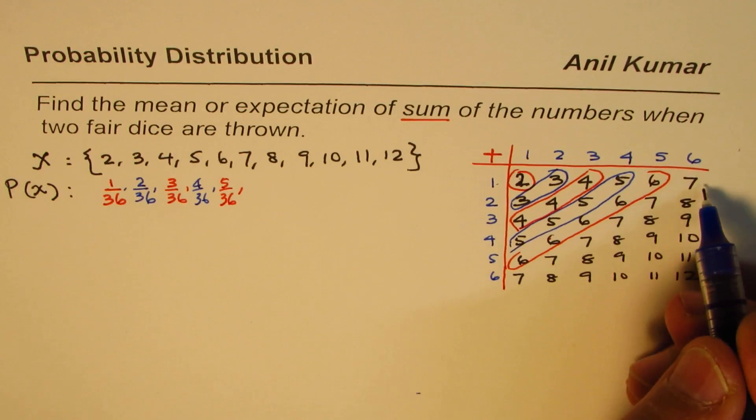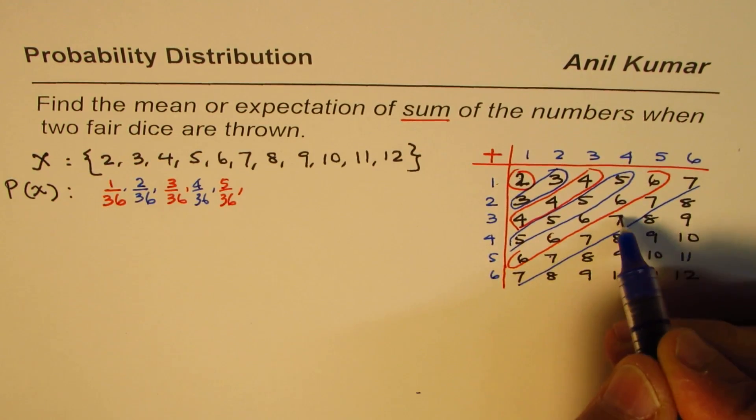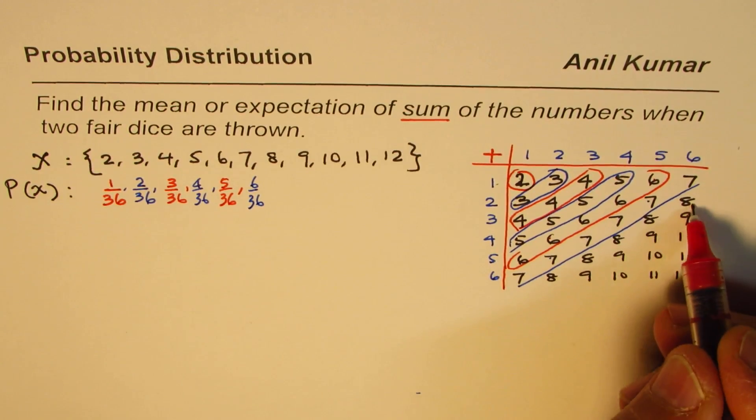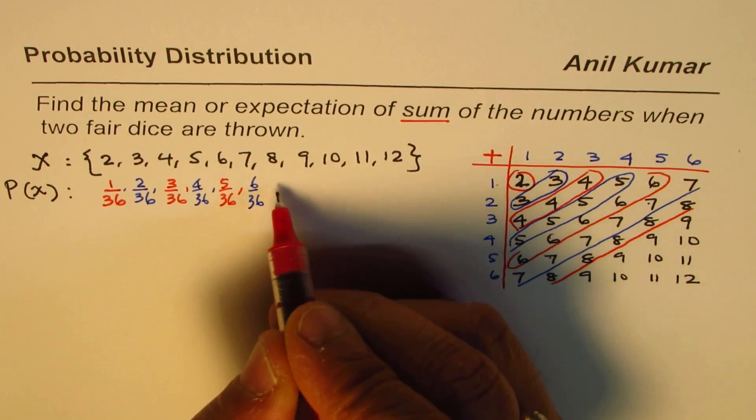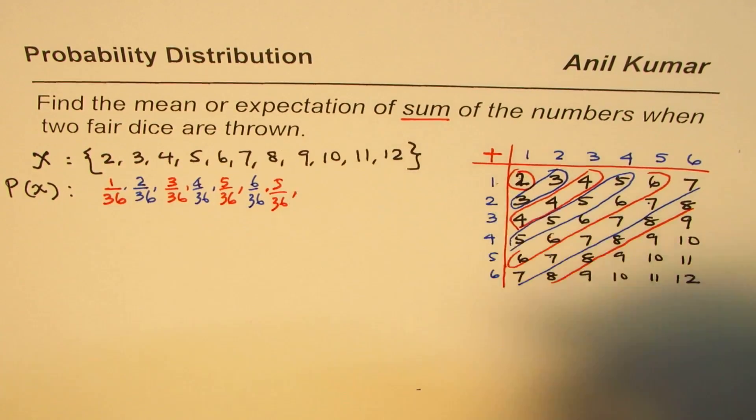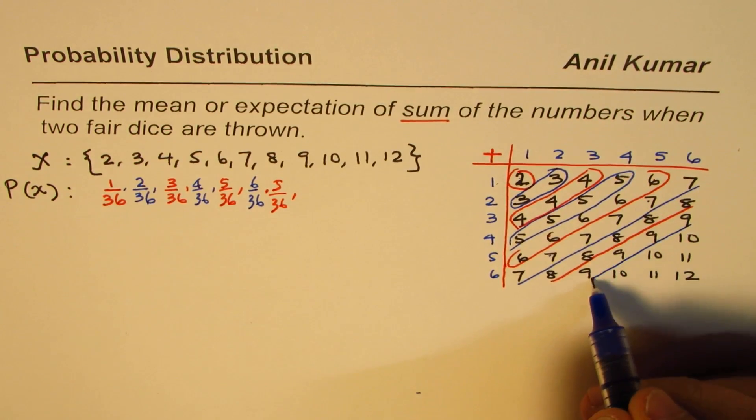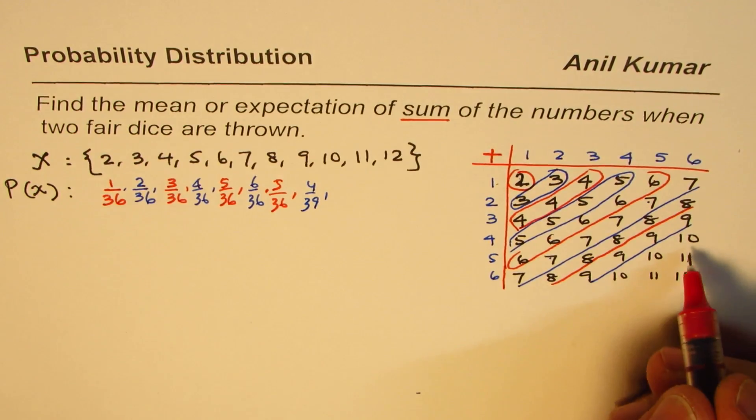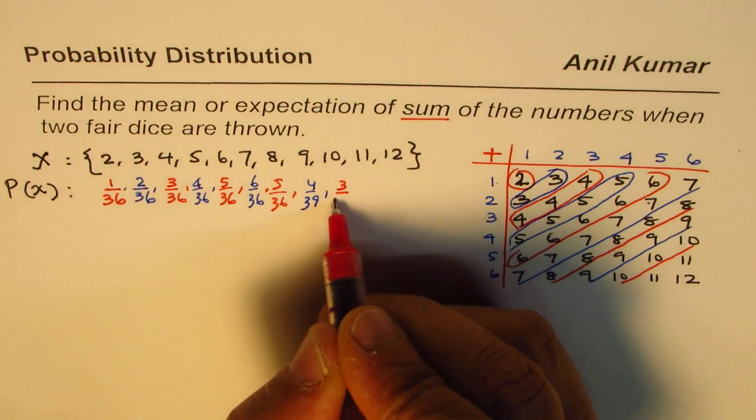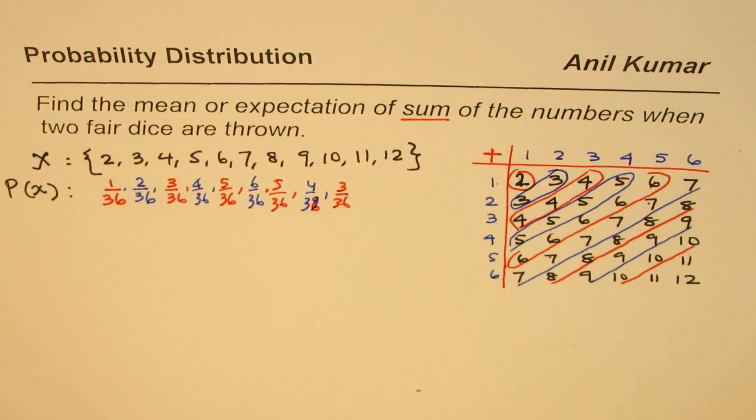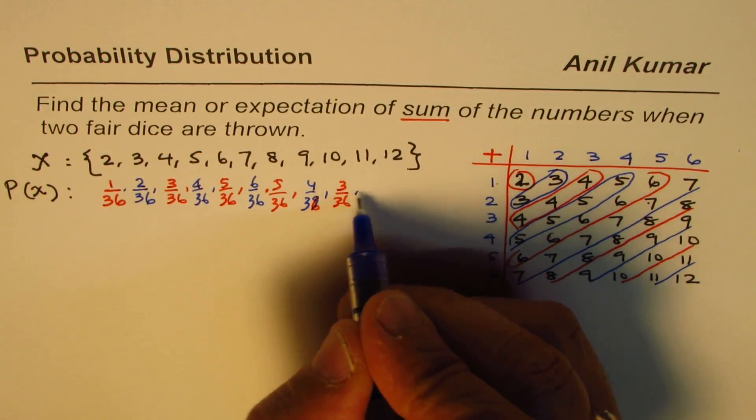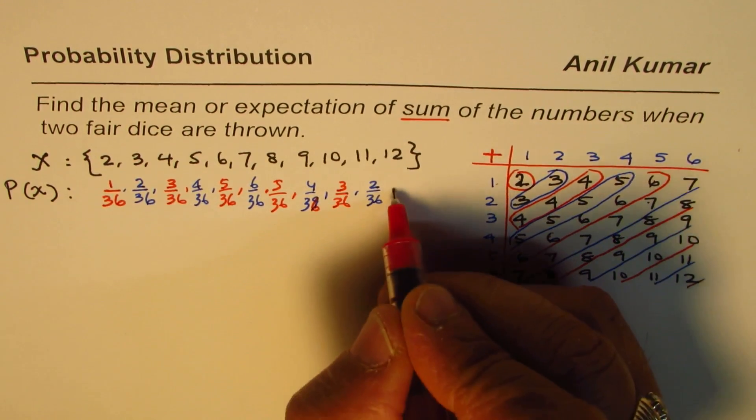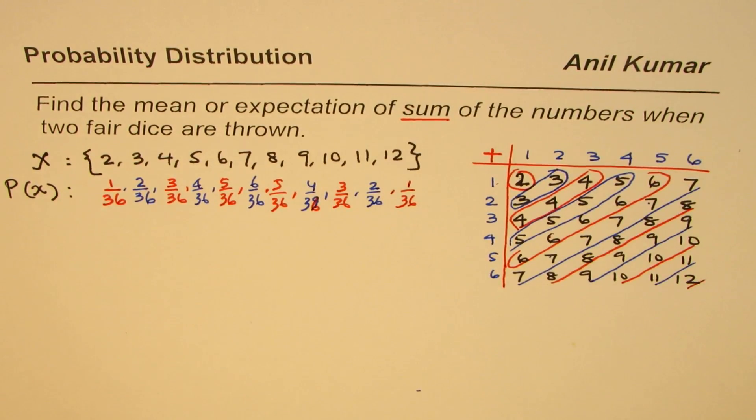For 7, counting gives us 6/36. For 8, there are five 8s, so 5/36. For 9, there are four 9s, so 4/36. For 10, we have three of them, 3/36. For 11, we have two, 2/36. And for 12, we have just one, 1/36. These are all the probabilities.